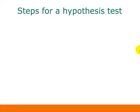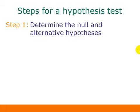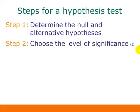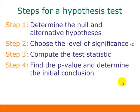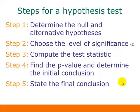We're going to go through the steps for a hypothesis test and then look at each step in more detail. Step one is to determine the null and alternative hypotheses. Step two is to choose the level of significance alpha. Step three is to compute the test statistic. Step four is to find the p-value and determine the initial conclusion. And step five is to state the final conclusion.